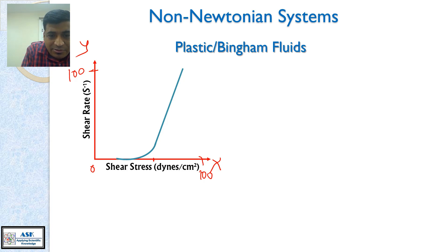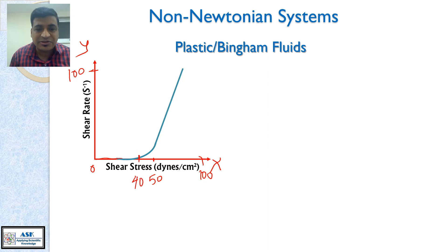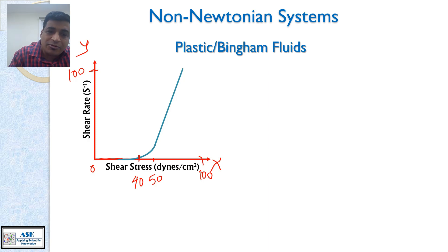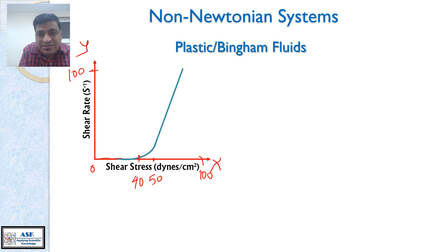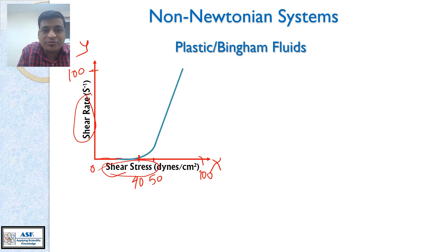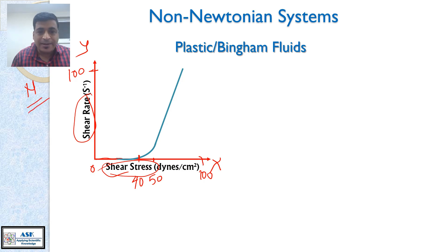Let us say this is the value of 50 in the middle. When you are applying certain shear stress up to here — let us say 40 dynes per centimeter square — things are not changing. But suddenly, after 50, these liquids follow a straight line relationship. And what is that straight line relationship? It is a directly proportional relationship between shear rate and shear stress — the same relationship Newtonian liquids follow.